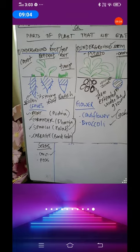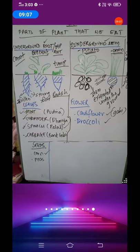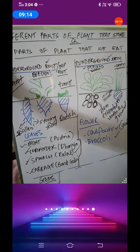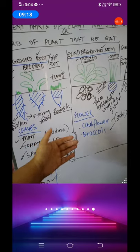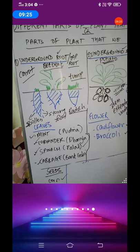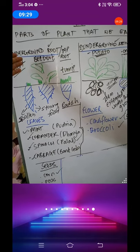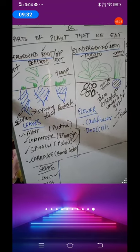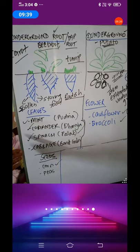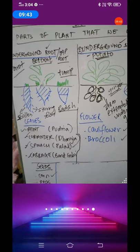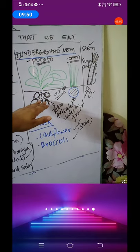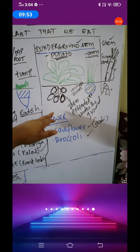Plants store food in those five parts for themselves and for us also, because we eat those parts. Always remember that whenever the functions of the root, stem, leaves, flowers, or seeds come up, you can write that food of the plant is also stored in those parts. Underground roots, underground stems, leaves, seeds, and flowers are all used for storage of food.